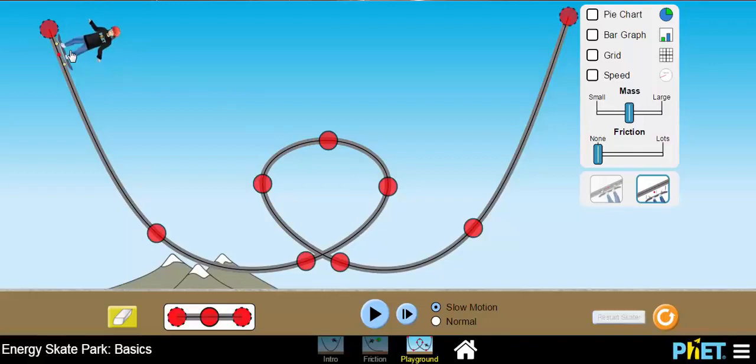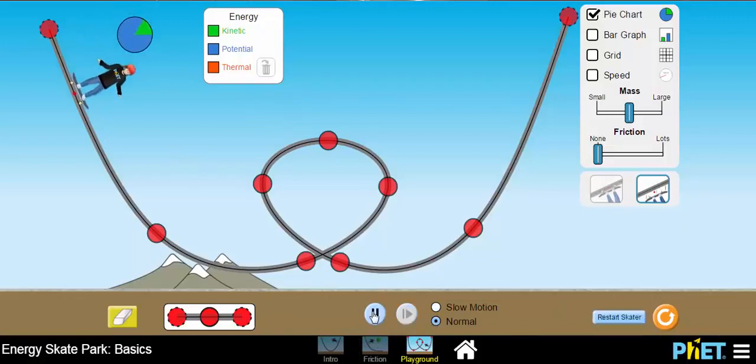So, what are some other things we can do? We can click pie charts. Pie chart is going to allow you to see the kinetic, potential, and thermal energy of the skater. It shows up in a little bubble above the skater's head. Let's take a look and see what that looks like. We'll put it on normal. There you go. You can see how that changes.